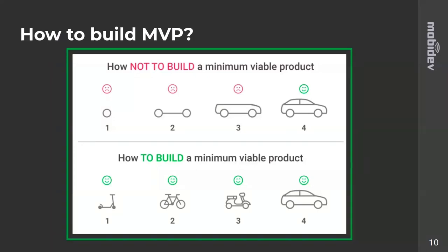This is a really great example of how to build and how not to build a minimum viable product. Our goal is to build a car, and it's a great choice to start from a scooter, then a bike, etc. At each iteration step we have a finite and completed product we can use. If something goes wrong at stage three in the wrong approach, all of our investments and time will be in vain.